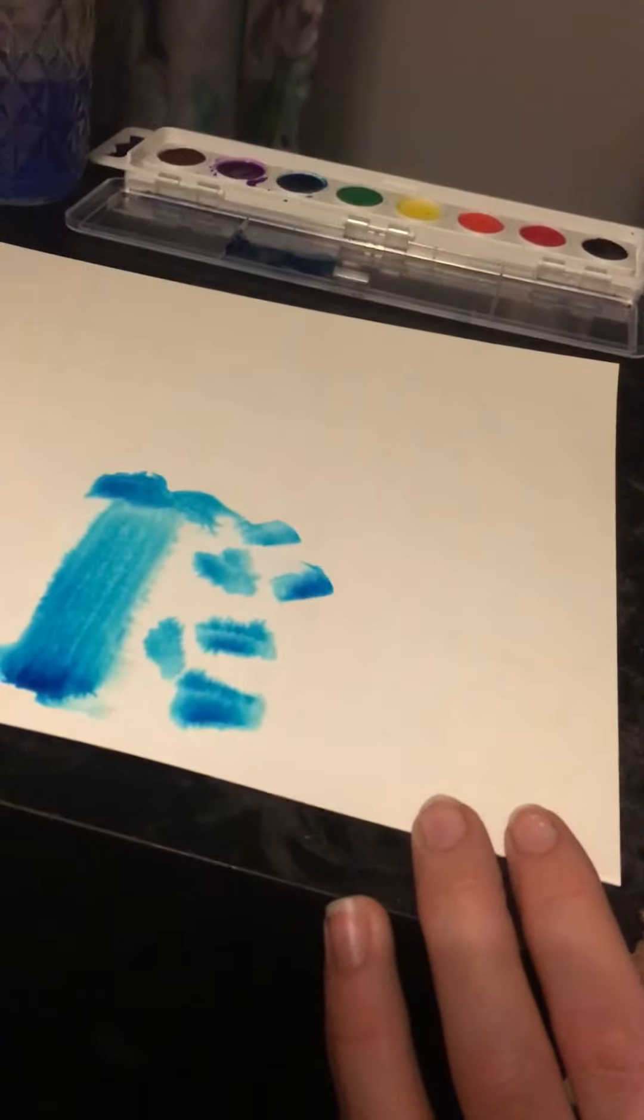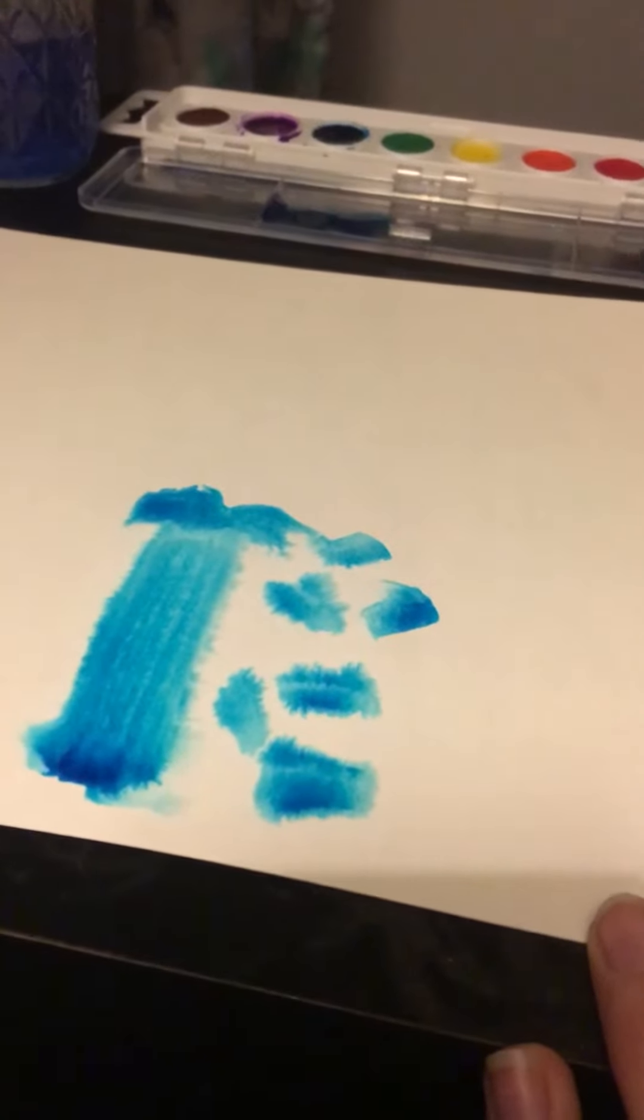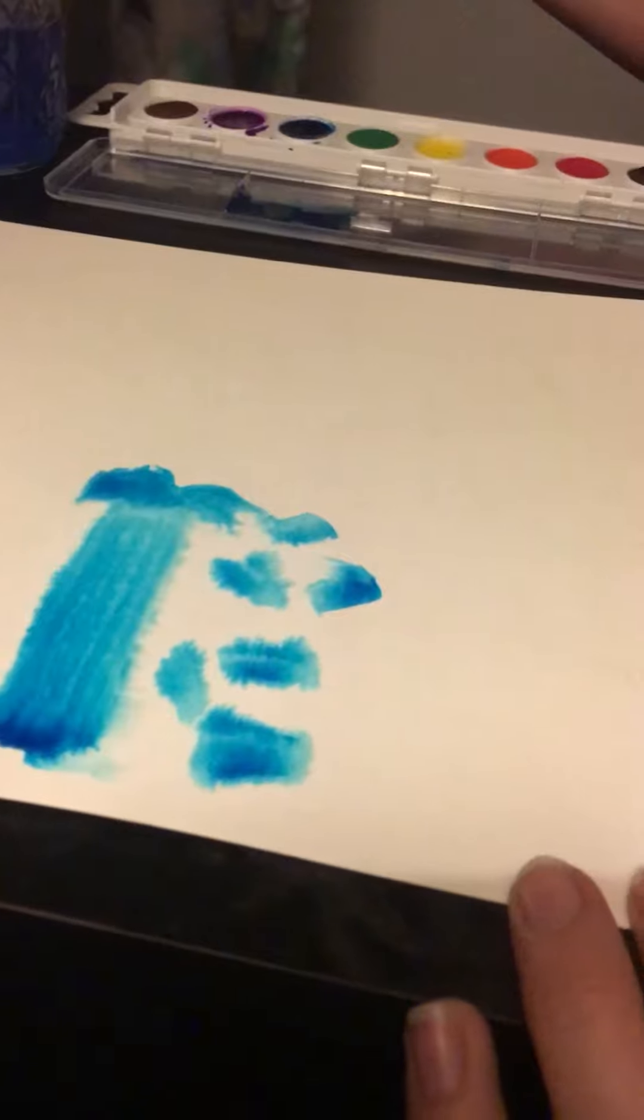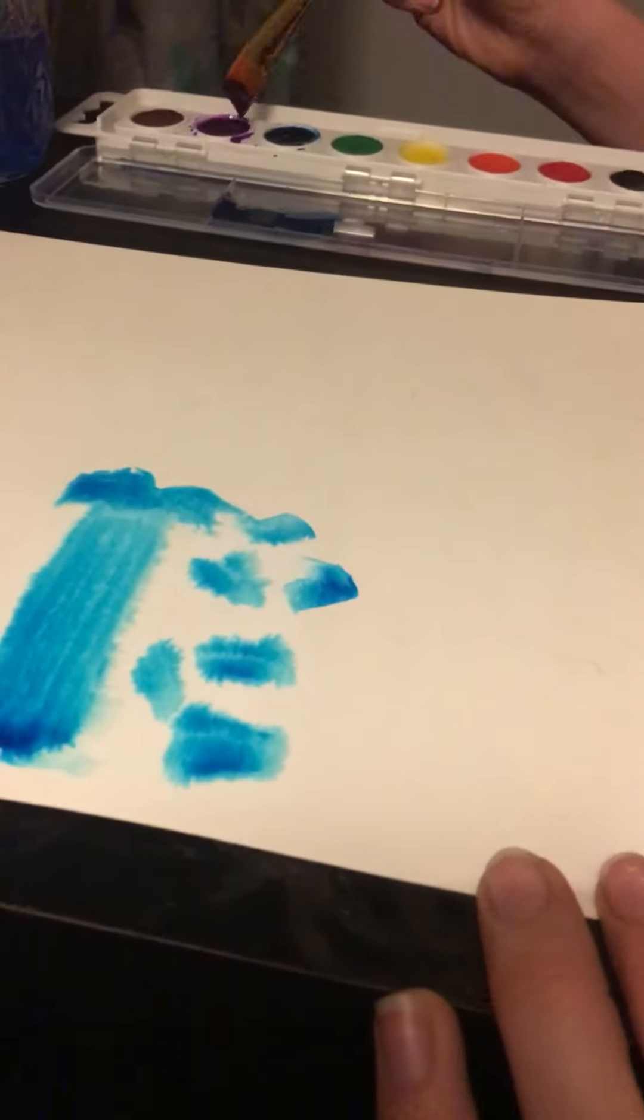But do you see that fuzzy, hazy edge this effect creates? Maybe you do more than one color to see how that works. I'm going to choose an analogous color—purple or violet.